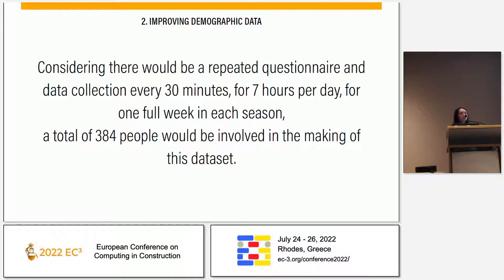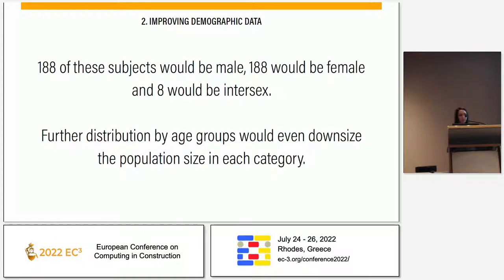Let's assume they were asked these questions every half hour, for seven hours per day, one full week per season — four times per year. Best case scenario, this amount of data would represent less than 400 people. And of those 400 people, 188 would be female, the rest male, with only eight intersex if they were careful enough to include them. Then you'd have to further categorize everyone by age groups, BMI, BSI, or other medical conditions — so the sample size of each category would be very minimal. This is the database that we base our operating standards on today.